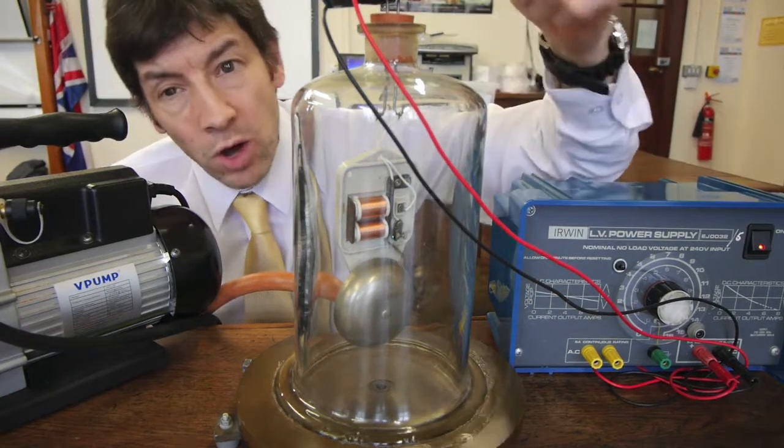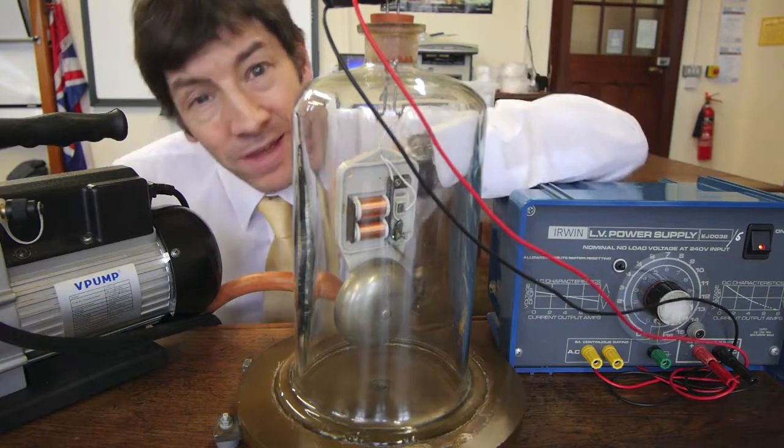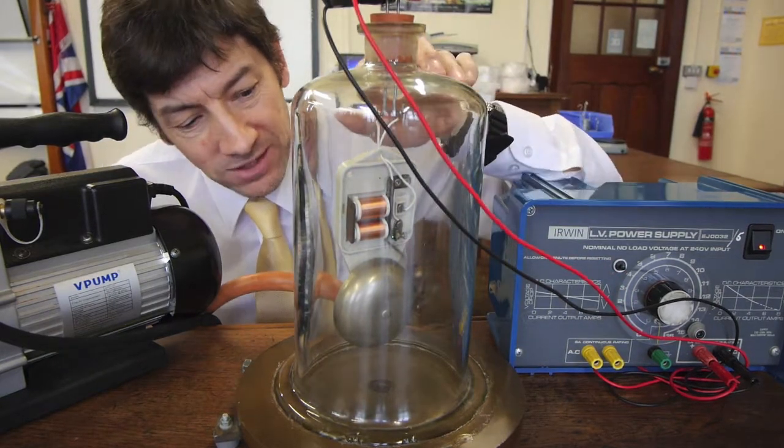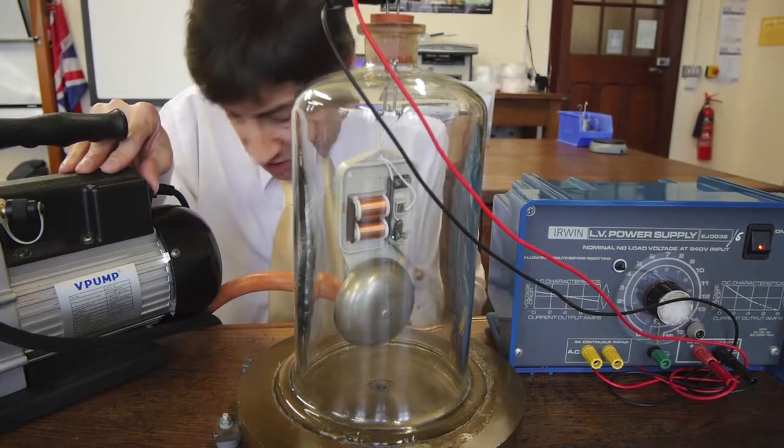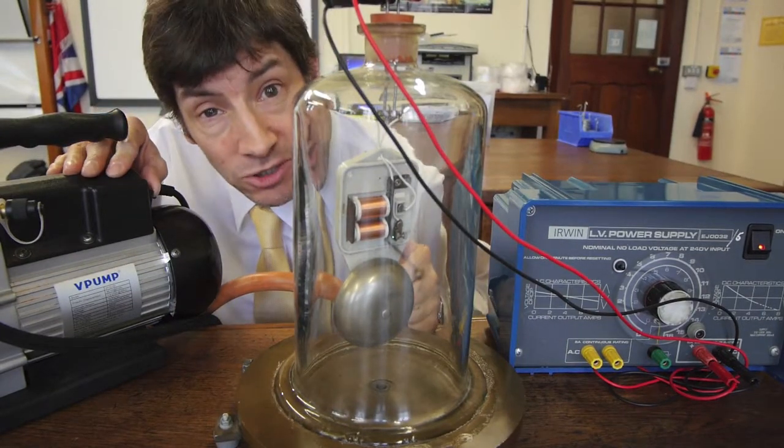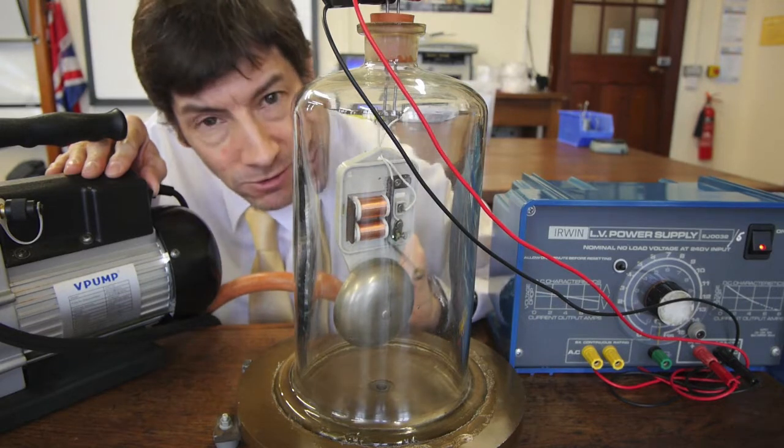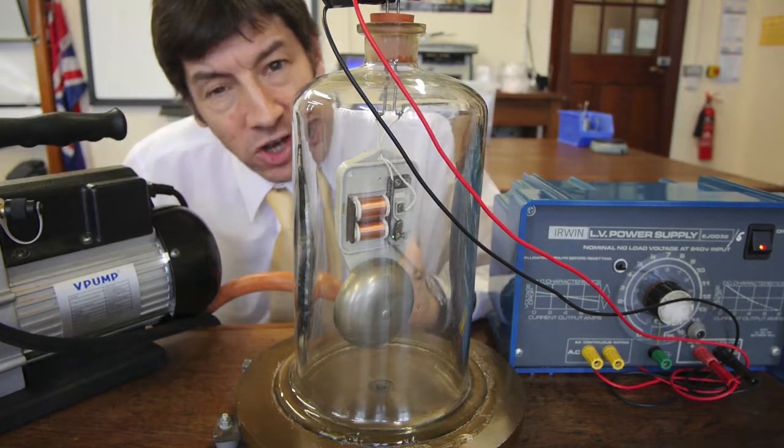And there are some wires coming from the power supply down into the electric bell in the vacuum chamber. And I hope you can hear it ringing reasonably well. And then we've got a vacuum pump here. I'm going to turn on the vacuum pump and slowly but surely remove the air from this bell jar and reduce the pressure inside it.